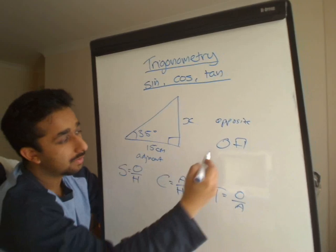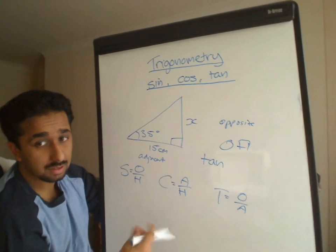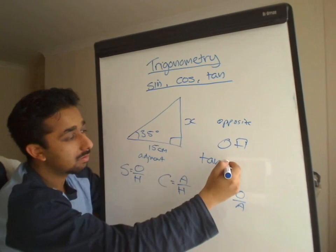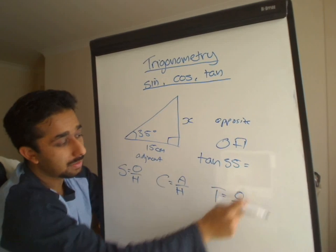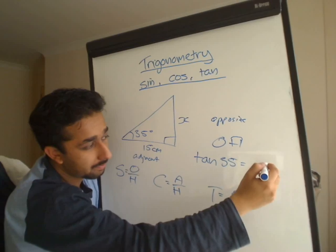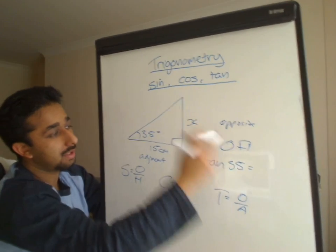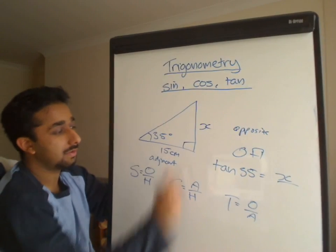So what does that tell you? You have to write tan. When you write trigonometry stuff, it goes either tan, then you write the angle, it's equal to, like this says, opposite divided by adjacent. So the opposite, this is the opposite, it's called x in this case, and the adjacent is 15.